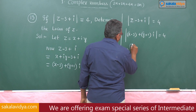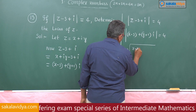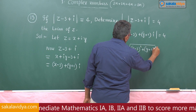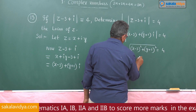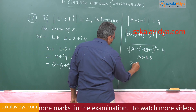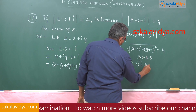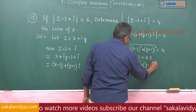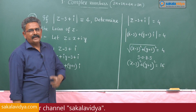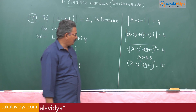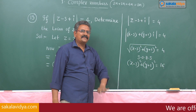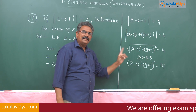What is given: modulus of z minus (3 plus i) equals 4. This is the modulus of a complex number, so the square root of (x minus 3)² plus (y plus 1)² equals 4. Squaring both sides: (x minus 3)² plus (y plus 1)² equals 16. This represents a circle whose center is at (3, minus 1) with radius 4 units. The locus of z is a circle.